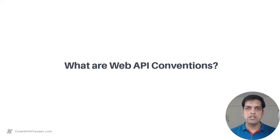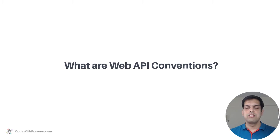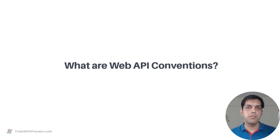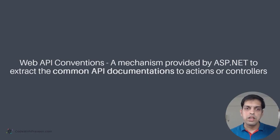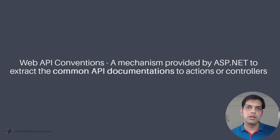What are Web API Conventions? These are pretty cool features available for Web API projects that will immensely improve your productivity. The reason being they automate some of the documentation process on your behalf. Web API Conventions refers to the mechanism provided by ASP.NET to extract common API documentation to actions or controllers. The key phrase here is 'common API documentation'.